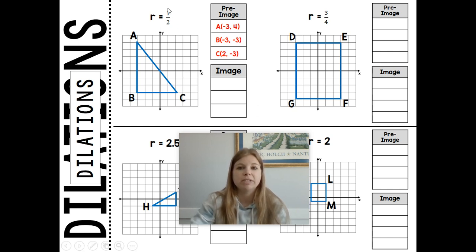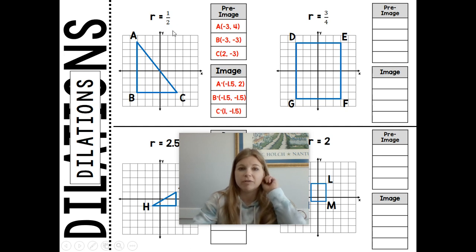If I was to have this figure undergo a dilation of 1/2, I'd multiply every x and y value by 1/2. So my A prime would become -1.5 and then 2. My B prime: -1.5, -1.5. My C prime: 1, -1.5. And you can imagine, if we saw before, if a reduction—a value less than 1—makes the value smaller, the new image smaller, then we can already assume what this is going to look like.